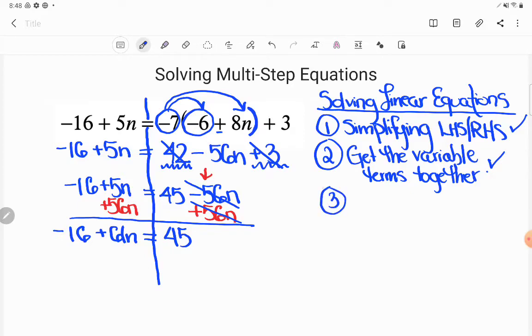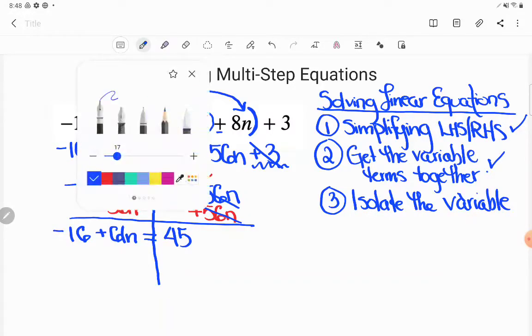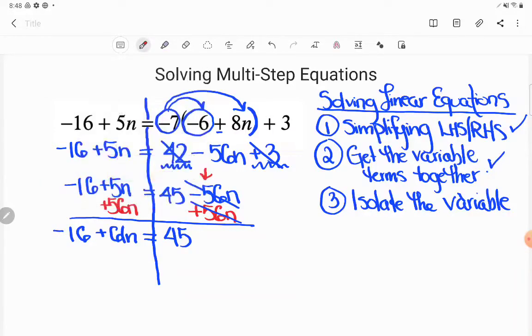On to the final step. And this is really the point of what we're doing. This is really what we need to do here. This is isolating the variable. Now what does isolate mean? It means get it alone. And what's the variable? It's the letter. So guys, all I'm saying here is get the letter alone. You want the letter by itself on one side of the equal sign. So your job is going to be to move away these numbers that are hanging out with that n.